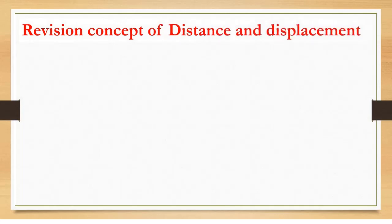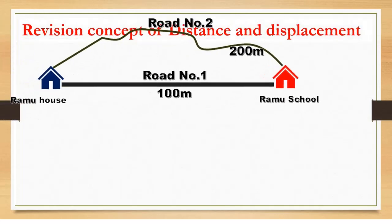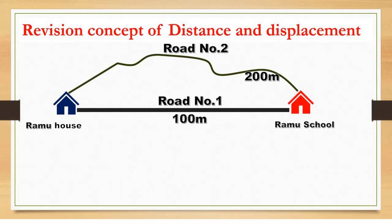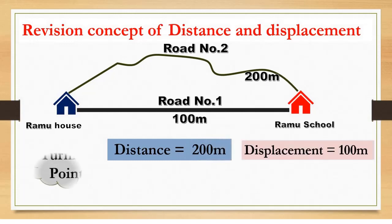Distance and displacement concept. Here given the problem: Ramu house to school. Ways are two types: Road number one is 100 meters, Road number two is 200 meters. So here we say that the distance between Ramu house to Ramu school is 200 meters. Displacement is 100 meters.